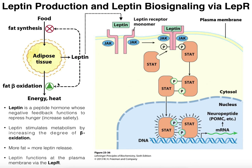Leptin is also going to stimulate fat degradation through beta oxidation. These two effects really amplify one major thing, and that is to decrease the amount of triglycerides in adipose tissue. Because the more triglycerides you have in the adipose tissue, the bigger the adipose tissue becomes, and that contributes to obesity. By decreasing the degree of fat synthesis, less fat is stored in the adipose cells, and concurrently, by stimulating beta oxidation, you have more fat degradation.